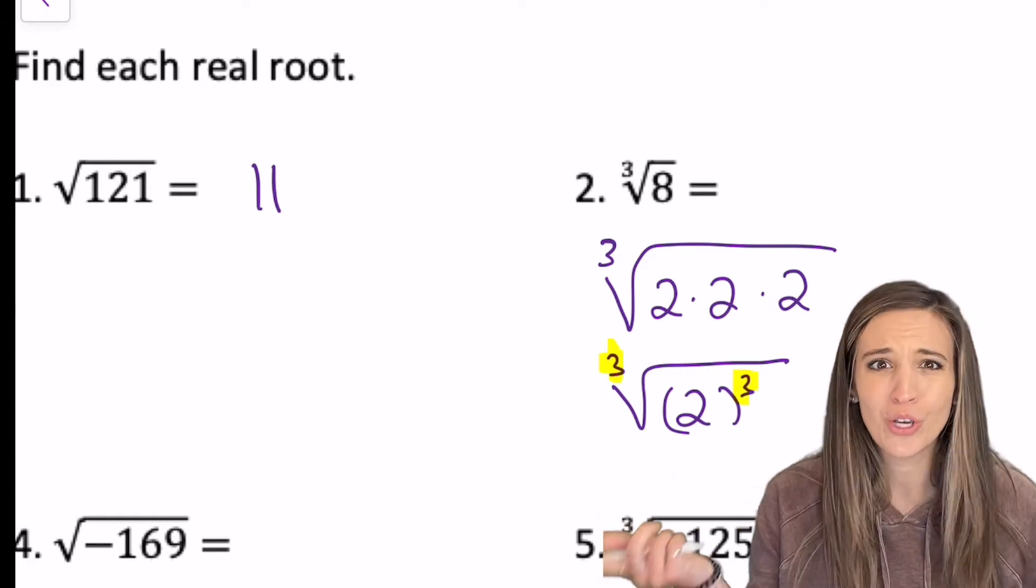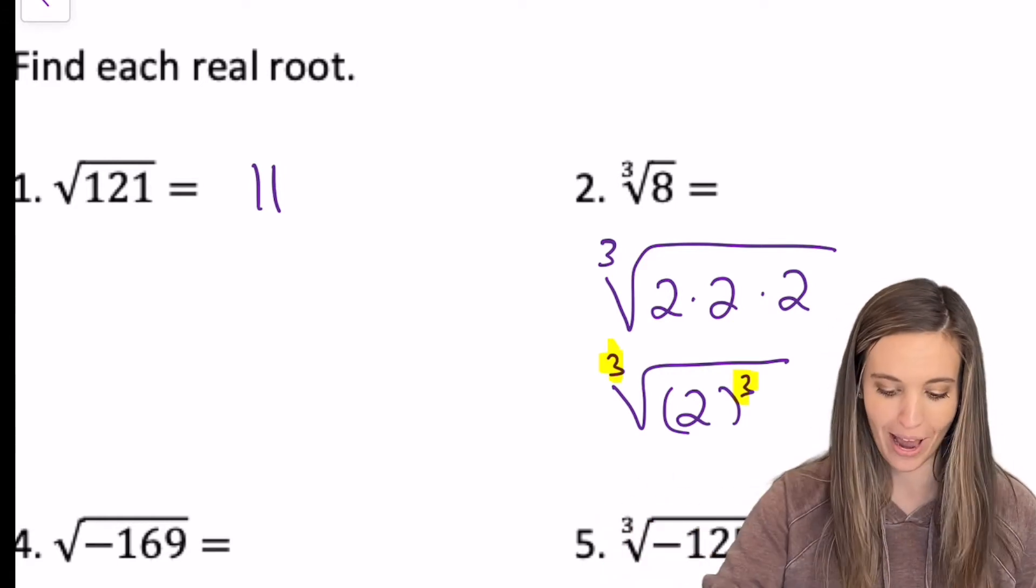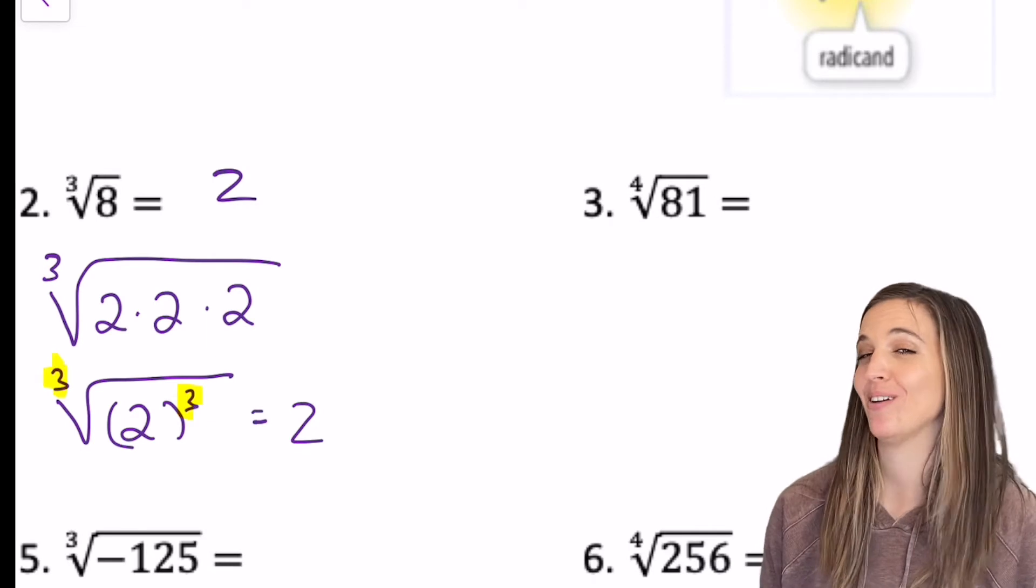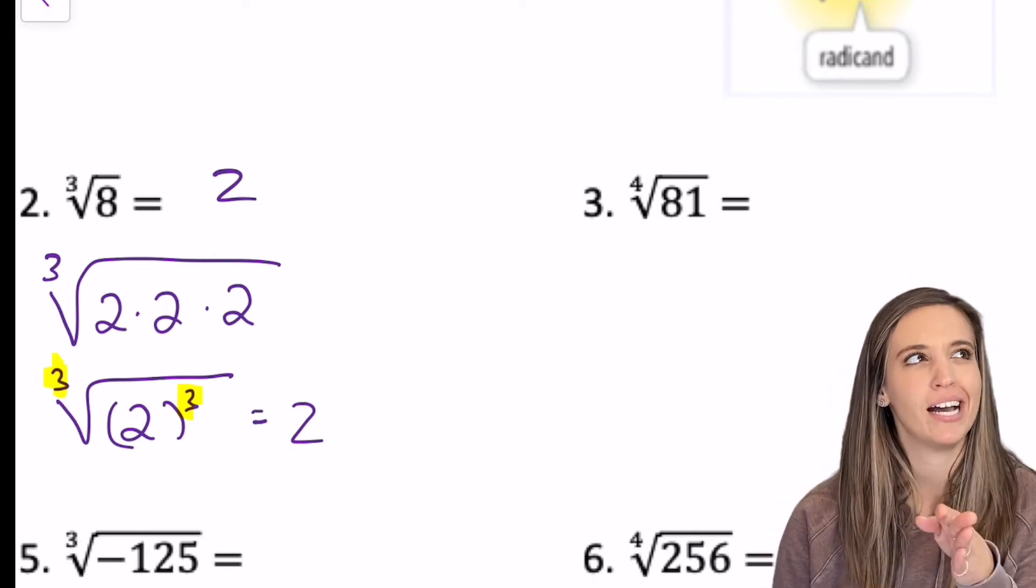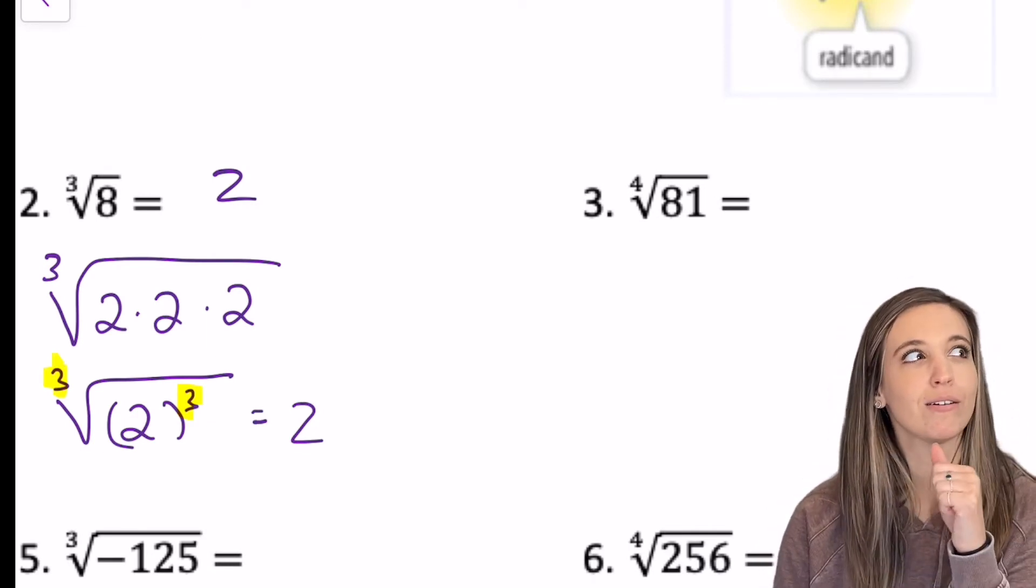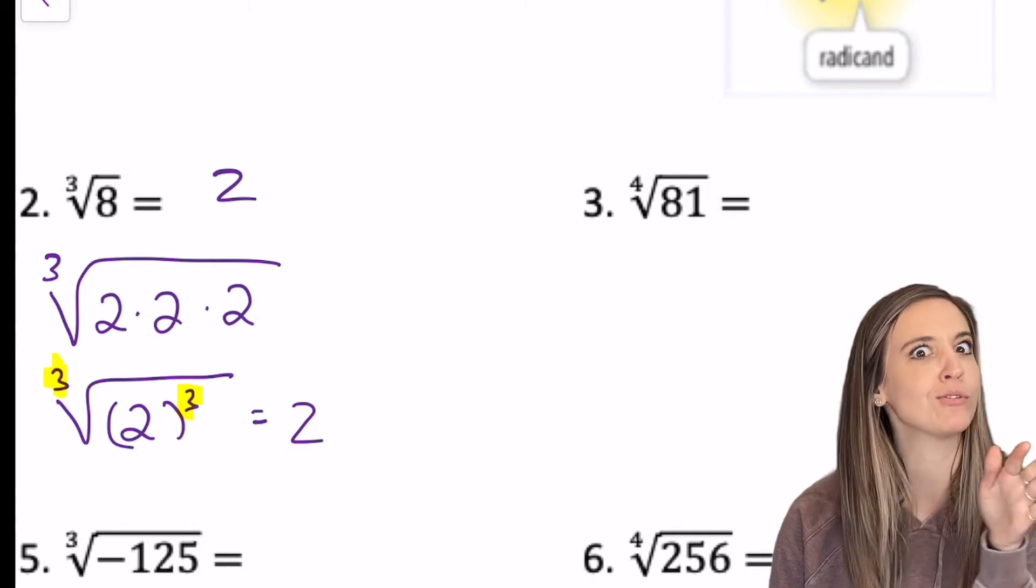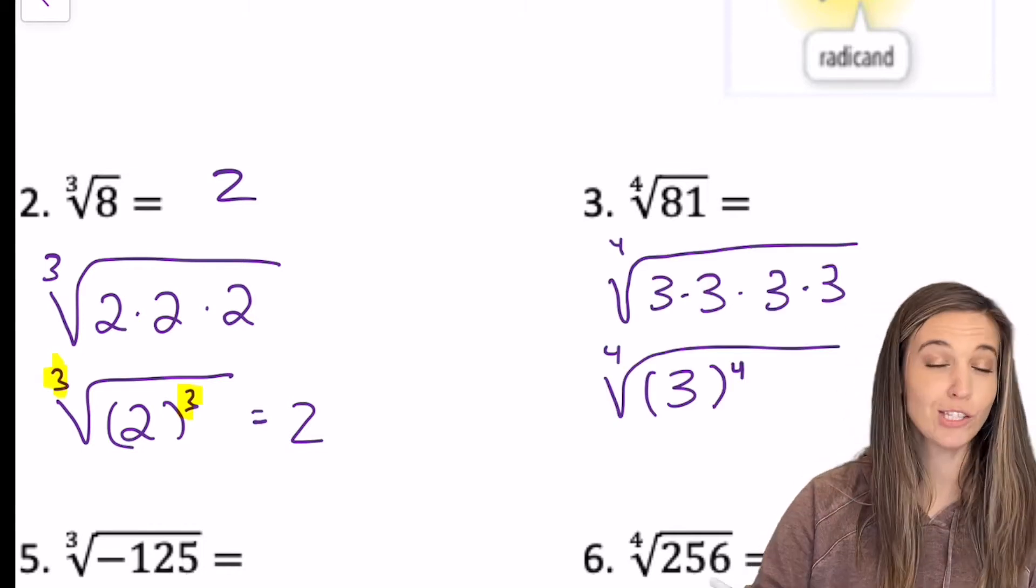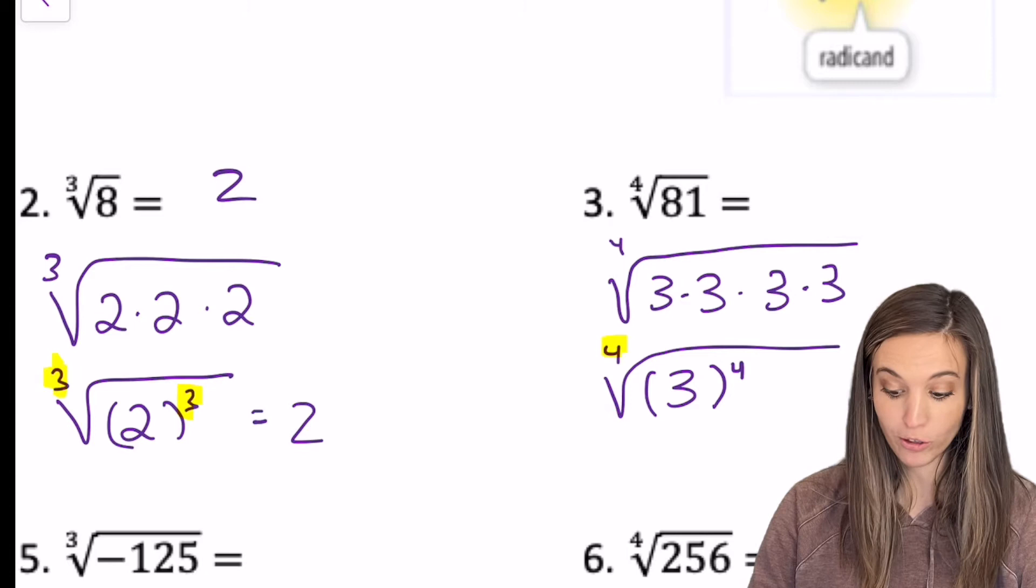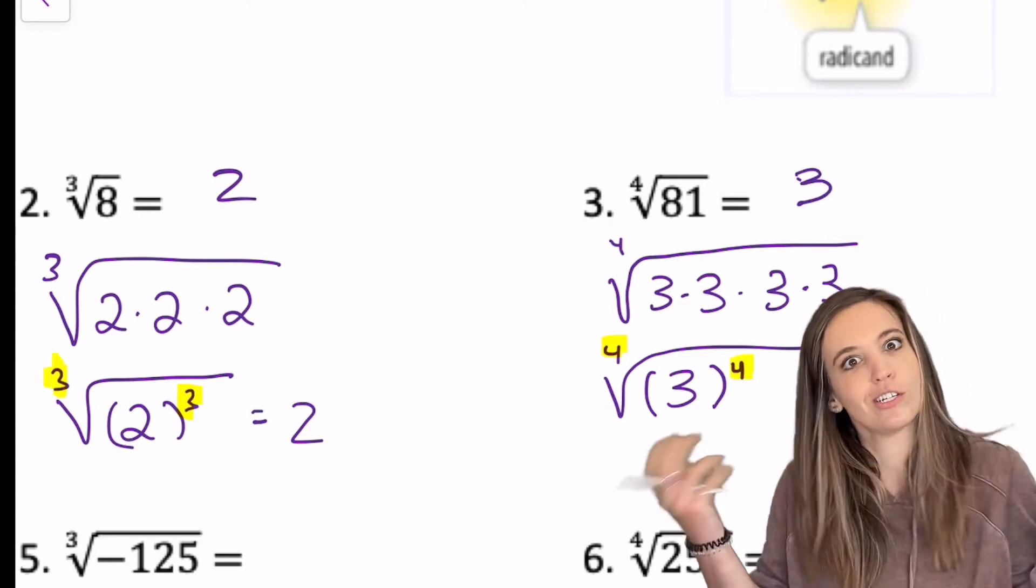So I know the cube root of two cubed. Well, that's just two, right? The fourth root of 81. Well, 81 is really nine times nine, but I want to look for four things. So nine times nine, that's three times three times three times three. So that's really three to the four. So the fourth root of three to the fourth would just be three.